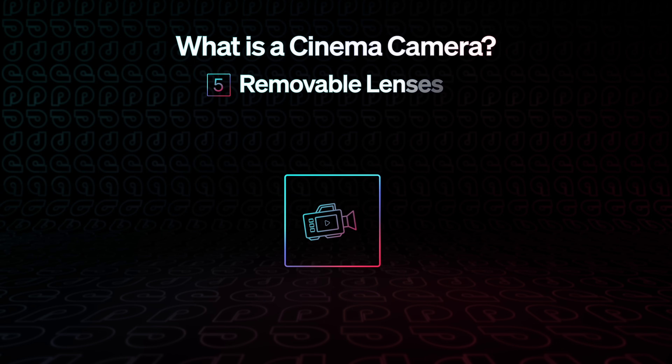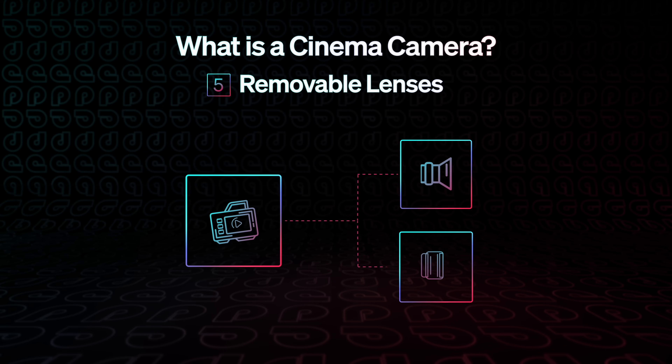And lastly, it needs to have removable lenses so filmmakers have total control over the look and feel as well as focal lengths. Since iPhone 15 Pro meets most of these specs, it's also why the iPhone product line may not be completely unreasonable for cinema solutions in a few years. But that fifth item — removable lenses — is not something iPhone does today.